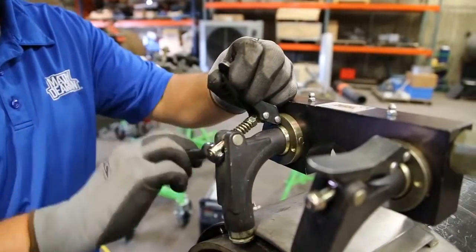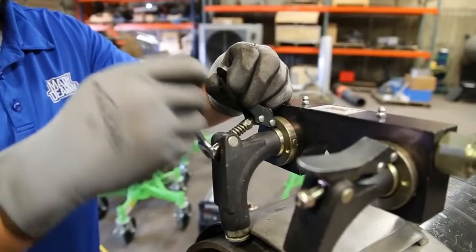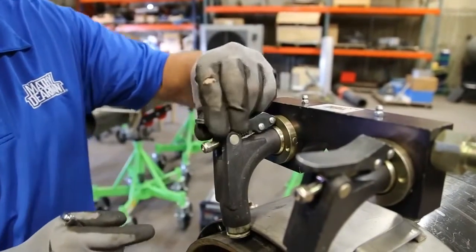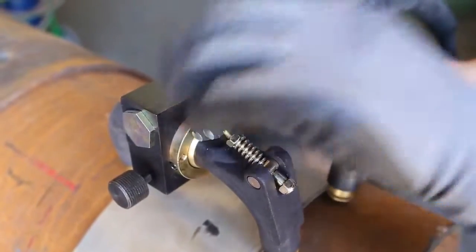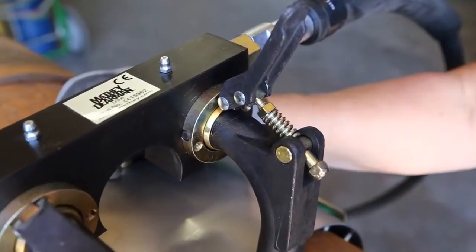On each leg, ensure the nut on the outside of the latch is flush with the end of the long latch pin. Also, make sure each leg has approximately three threads showing on the long latch pin before the tension nut.